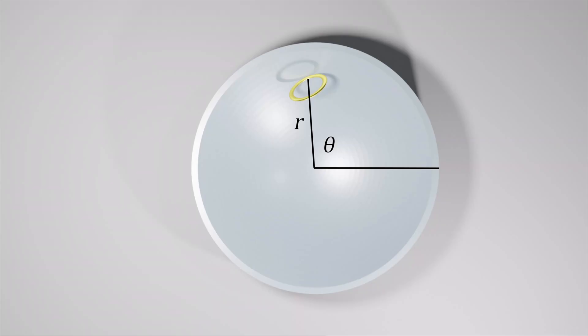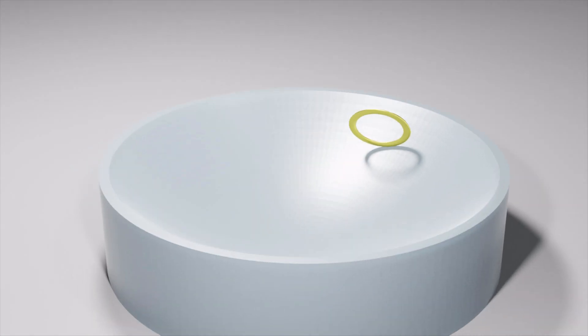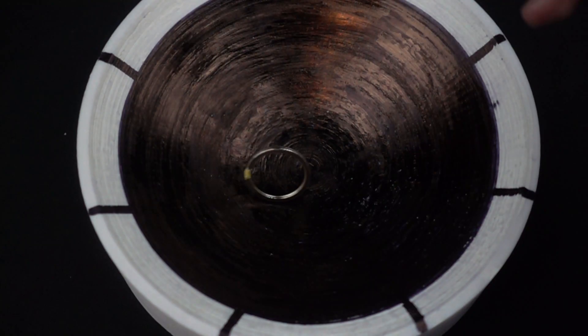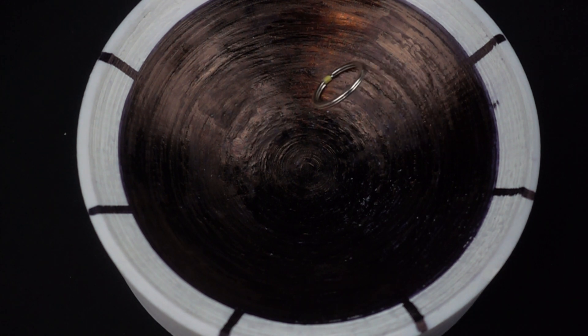We can specify the contact point between the bowl and the ring by a radius and an angle. The height off the ground is known from the geometry of the parabola. We can tag on three axes to the point of contact, and the ring can rotate about any of these three axes. We clearly saw slipping, so the rate of rotation about these axes need not be coupled with the rate of sliding along the surface of the bowl.